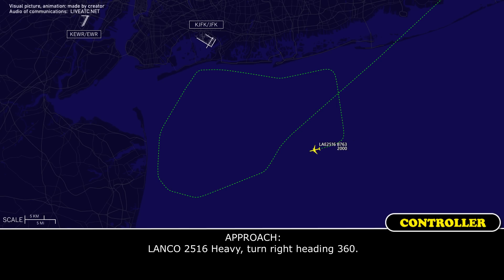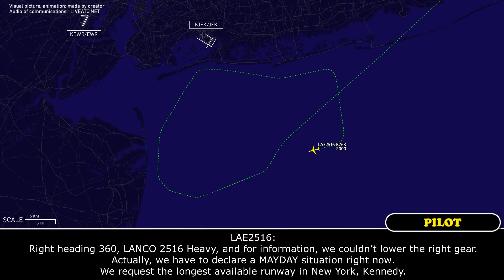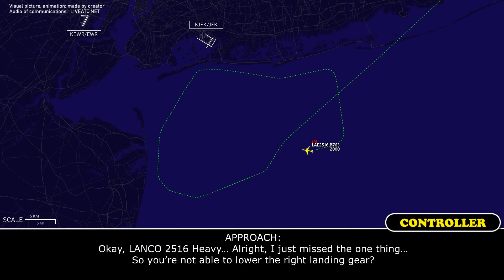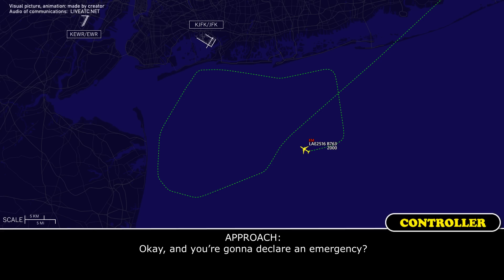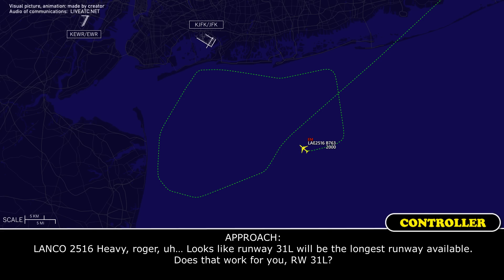2560 heavy, turn right heading 270. Right heading 270, Landfall 2560 heavy. Turn right heading 360. Right heading 360, Landfall 2560 heavy. For information — we couldn't lower the right gear. We have to declare an emergency right now. We request the longest available runway at Kennedy. So you are not able to lower the right landing gear and you are declaring an emergency? It looks like runway 31L will be the longest runway available — does that work? That's perfect.